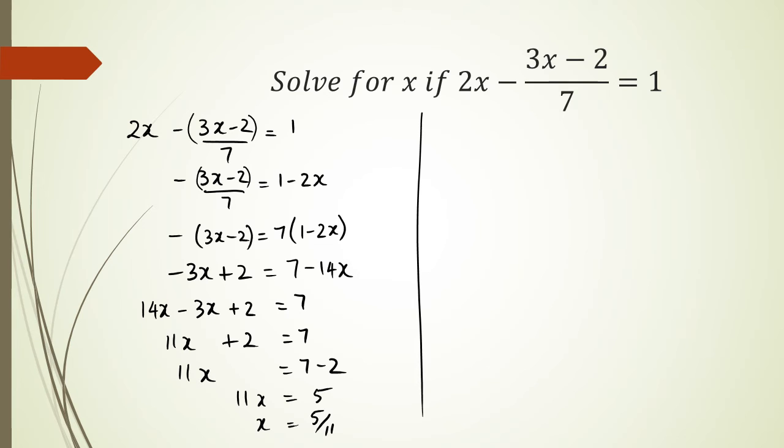Doing it the other method that I talked about - the one where I multiply the denominator with every other term. I have 7 times 2x minus (3x - 2)/7 = 1. I'm going to multiply every term by 7, and this 7 gets cancelled with this 7.